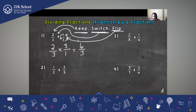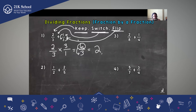Now we just multiply straight across: two times three is six, and three times one is three. So our answer is six thirds. But that's an improper fraction, so we need to convert it to a whole number or mixed number. We divide the numerator six by the denominator three — how many whole groups of three can we pull out of six? The answer is two, with no remainder. So our answer is two.